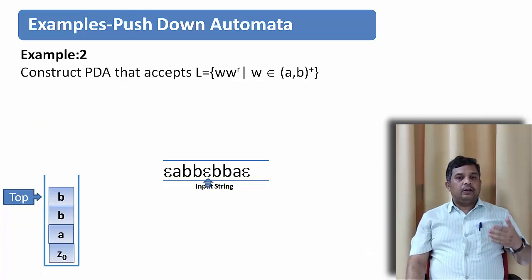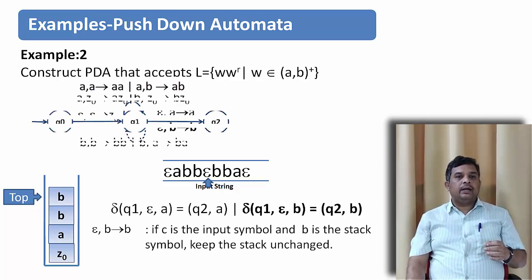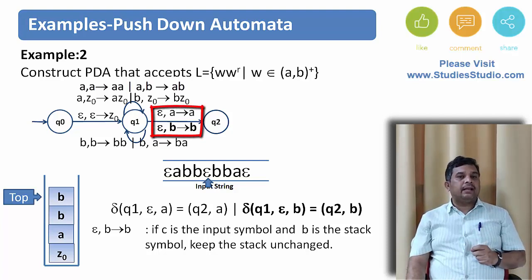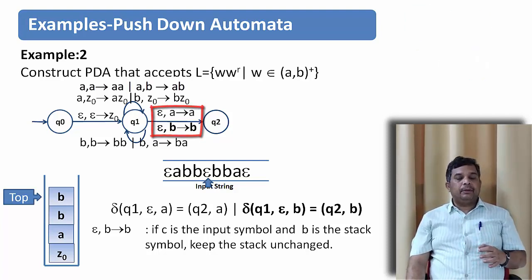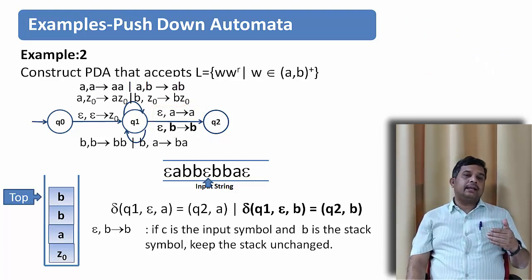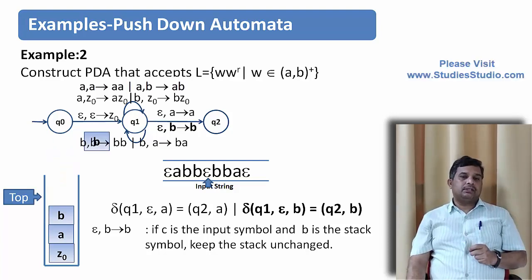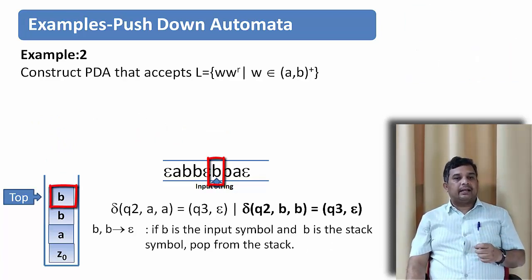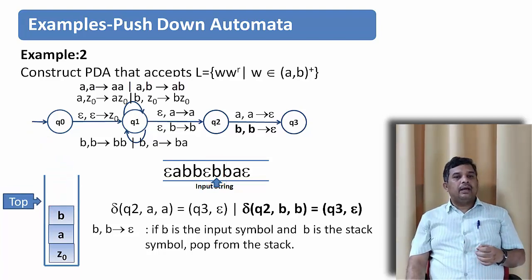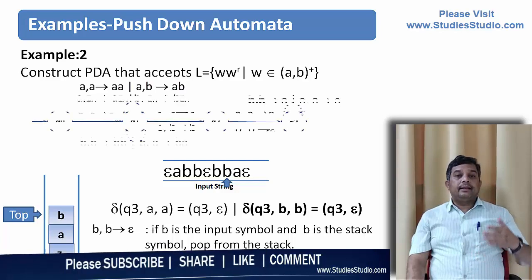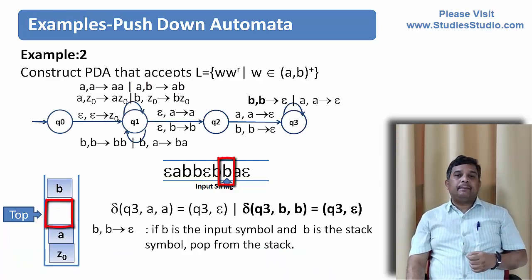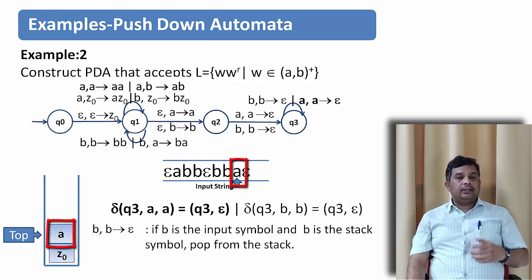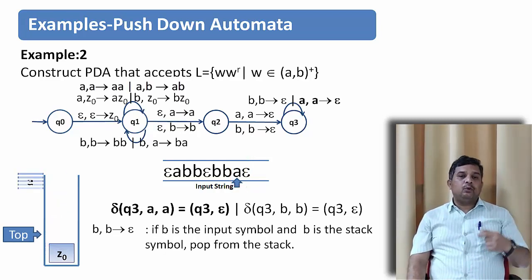When epsilon appears, we are in state Q1 and transition to state Q2. The stack symbol may be either a or b — whatever is at the top of the stack we keep it as is, simply moving to Q2. In our example, b was at the top, so we keep b there. Then the next input symbol is b with b at the top of the stack — they match, so we pop it off. The next b matches b at the top, so we pop again. Then a matches a at the top, so we pop that off too.